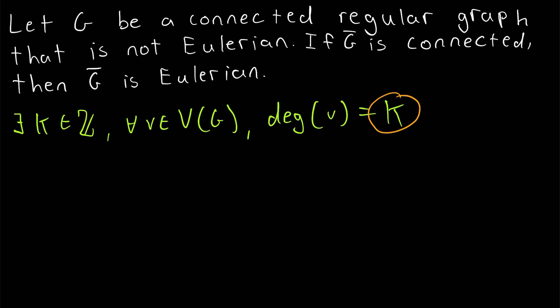Now, what do we know about K? Do we know anything at all about K? Yes, in fact, we do. Since G is not Eulerian, K cannot be even. Thus, K is odd. So every vertex in our graph G has this odd degree K.